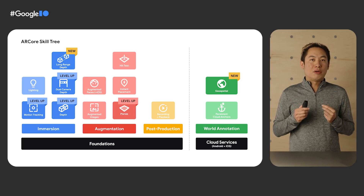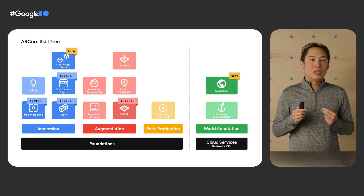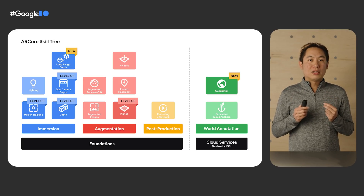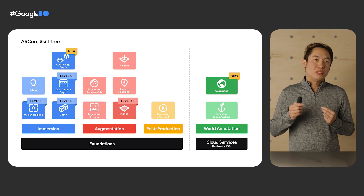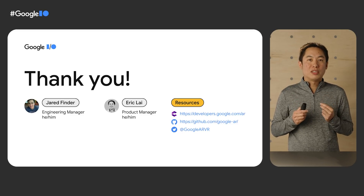Good AR seamlessly integrates virtual objects into the real world such that they are indiscernible from real objects. To enable this, we've been leveling up the ARCore skill tree, both adding new skills as well as making our existing capabilities faster, more accurate, and available to everyone. By combining these capabilities, you can build compelling new AR experiences. I hope you're as excited as I am about the future of AR. Please check out our developer resources and samples as well as our other talks. Thank you so much for your time and I can't wait to see what you build next.